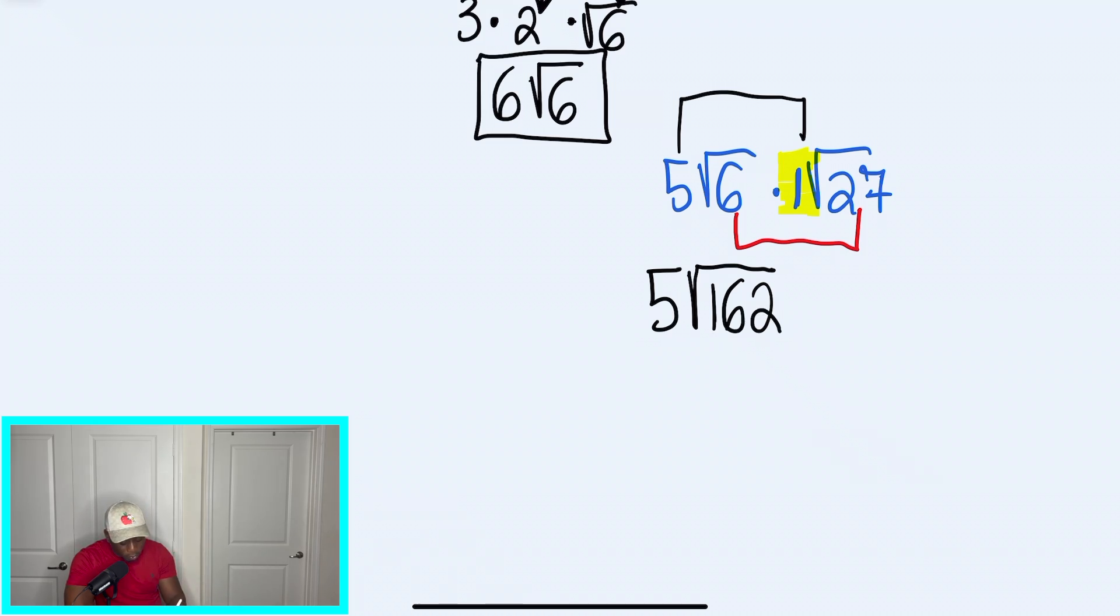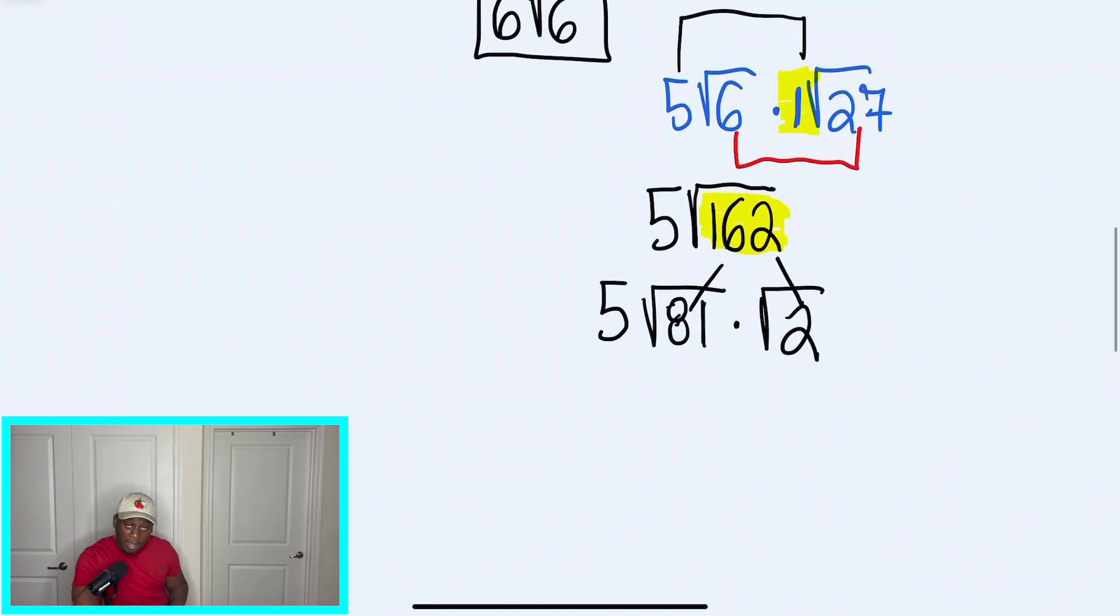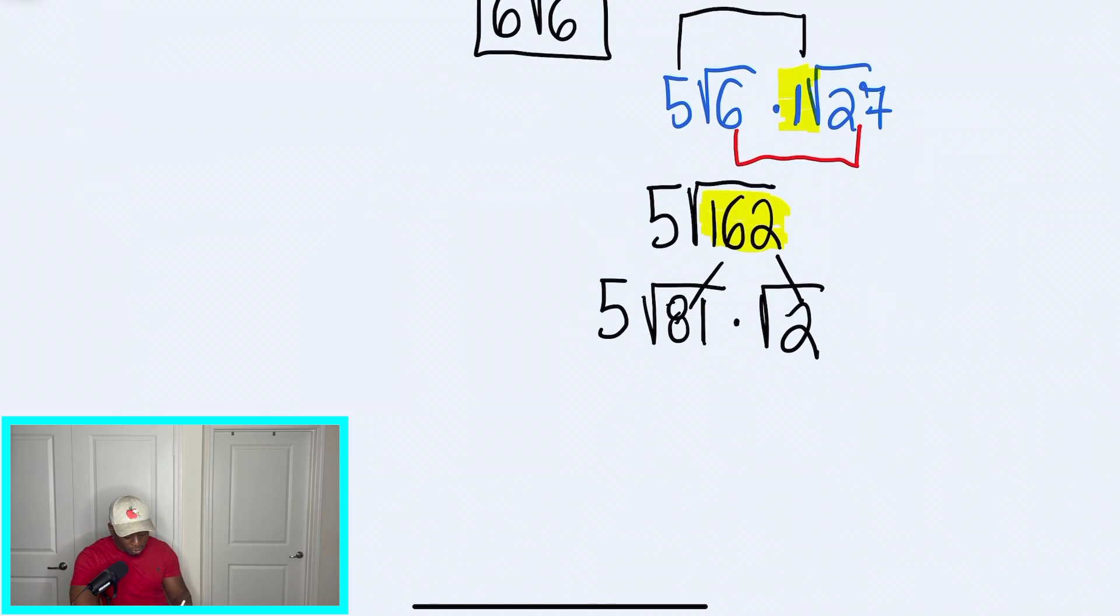And luckily for me, I'm good with these square roots. So I know that the largest perfect square that goes into 162 is 81. 81 times 2. So radical 81 times radical 2 gives us that radical 162. Now that we broke it down and we found those factors, we need to focus on trying to see if we can simplify anymore.